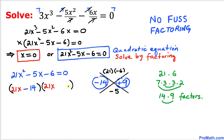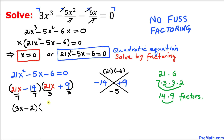We write negative 14 in the first parenthesis and positive 9 in the second. In the first parenthesis, 21 and 14 share a common factor of 7, so divide both by 7. In the second parenthesis, 21 and 9 share a common factor of 3, so divide both by 3. The first parenthesis gives us 3x minus 2, and the second gives us 7x plus 3. There's nothing further in common, so we set this equal to 0.